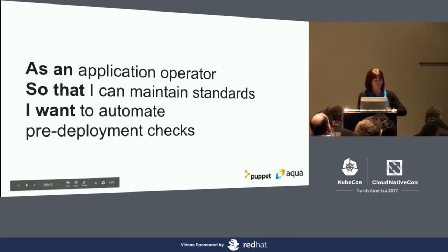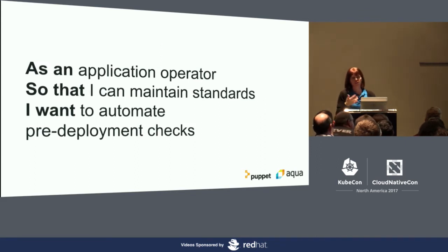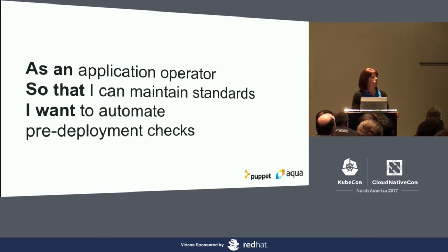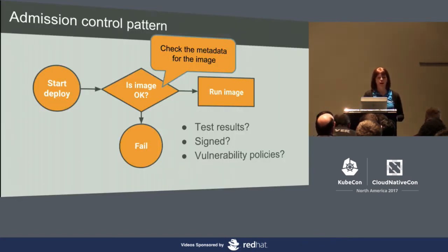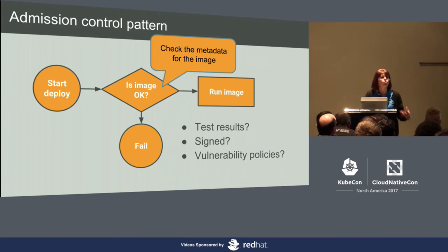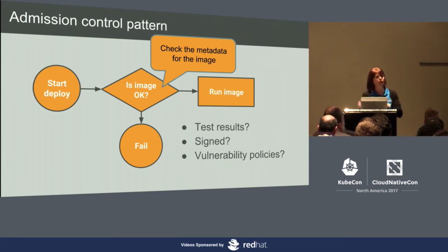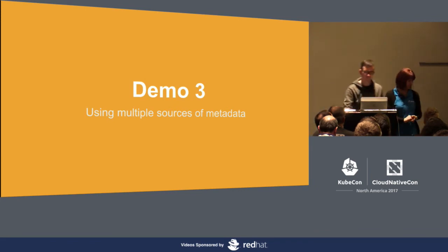I'm not going to demo this one due to time, but Kelsey basically put together a Grafeas tutorial covering this particular admission control pattern. As an application operator, there may be things you want to check for before software is allowed to run in your deployment. The admission control pattern is: before you go ahead with the deployment, validate that some standards — whatever metadata you want to check — have been complied with. Kelsey's Grafeas tutorial walks through checking that images have been signed by an authoritative source before they can be deployed.